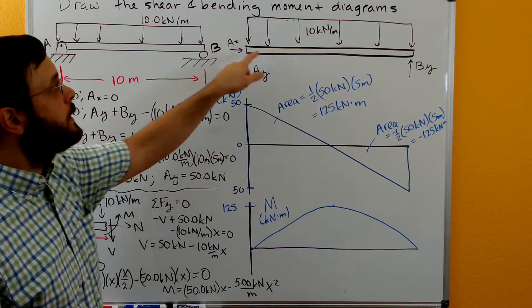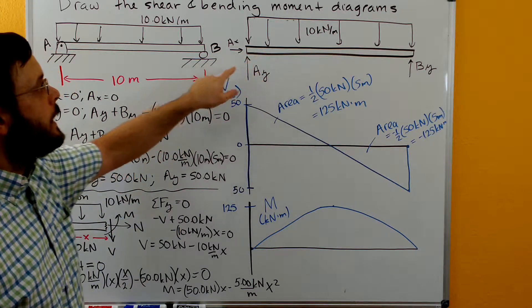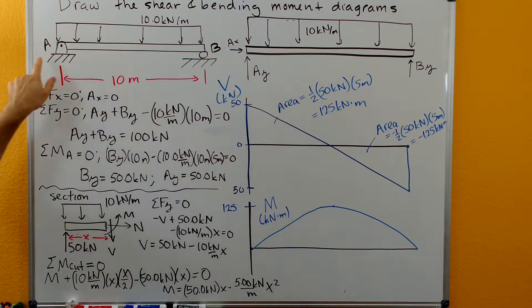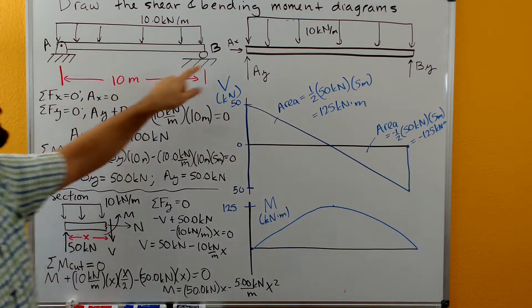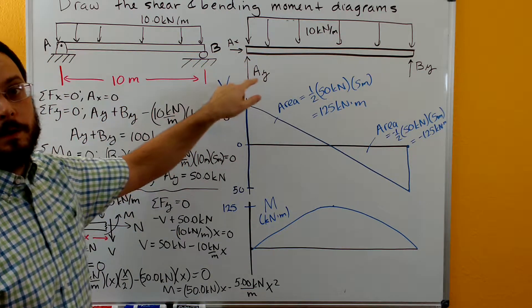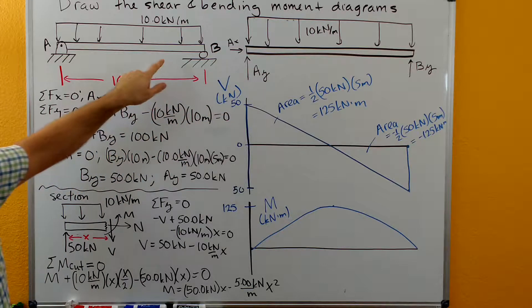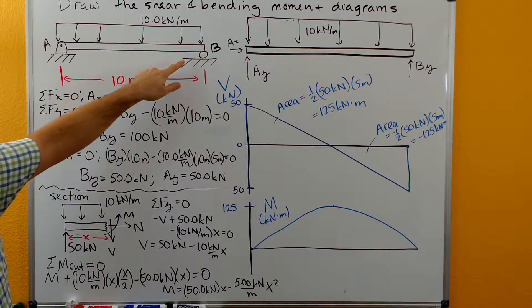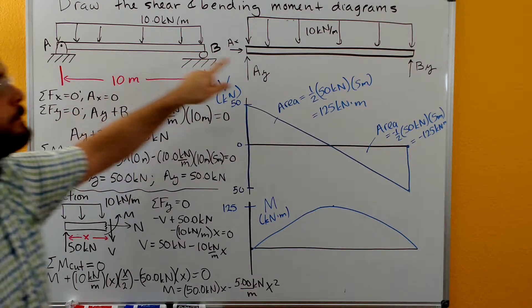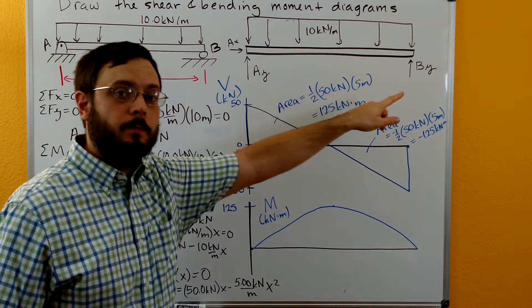Here's our free body diagram. We have a pin at A, so we have an AX and an AY. We have a frictionless roller at B, so we have a BY.